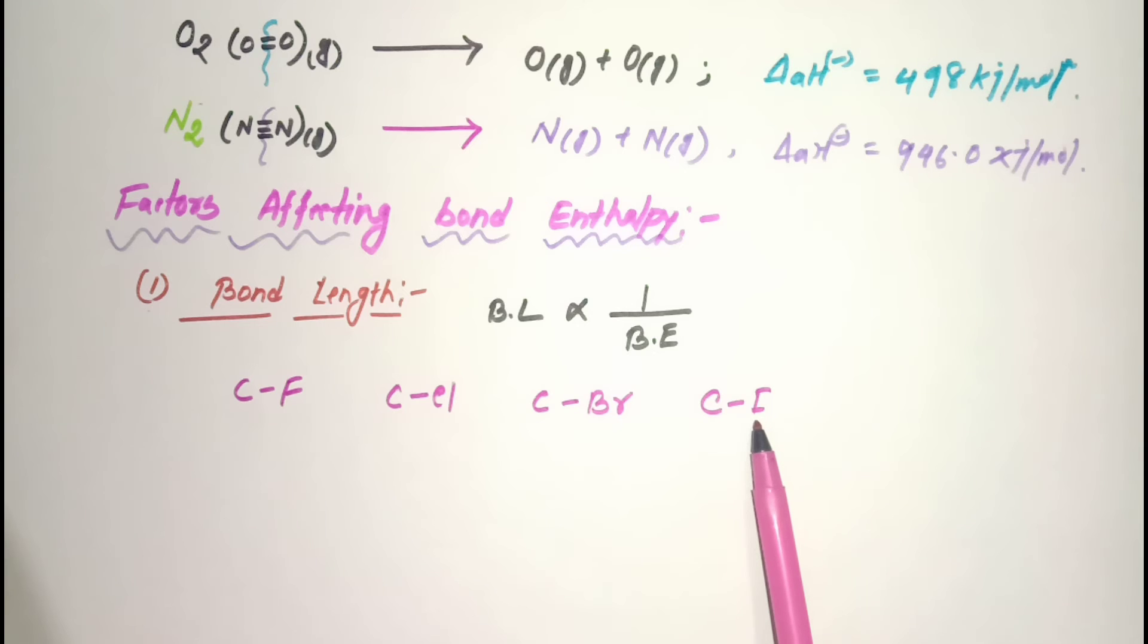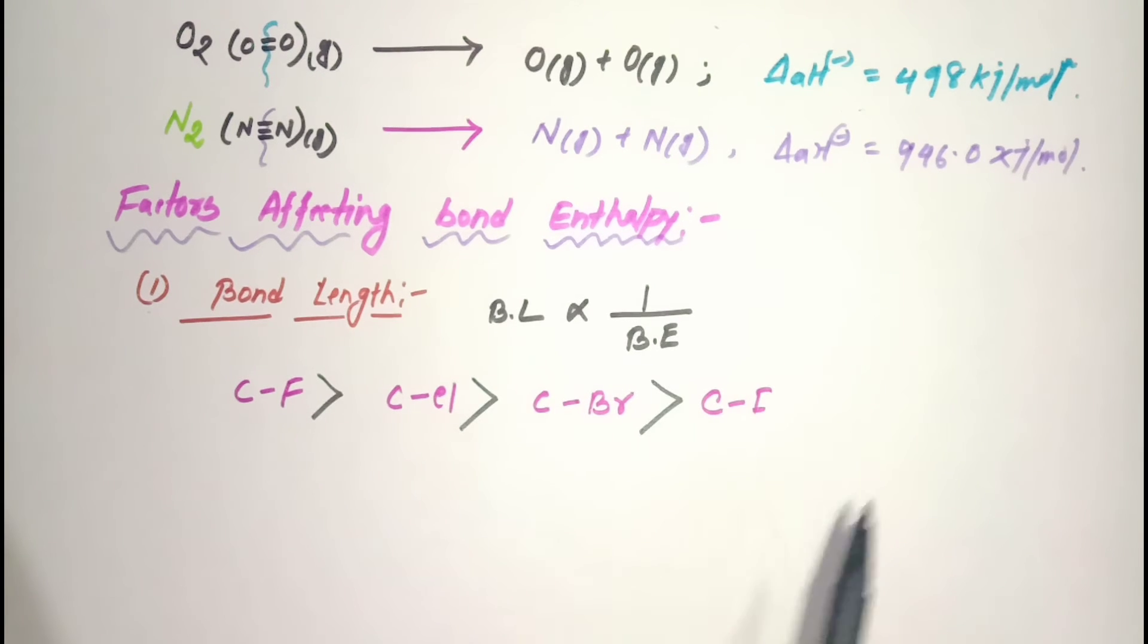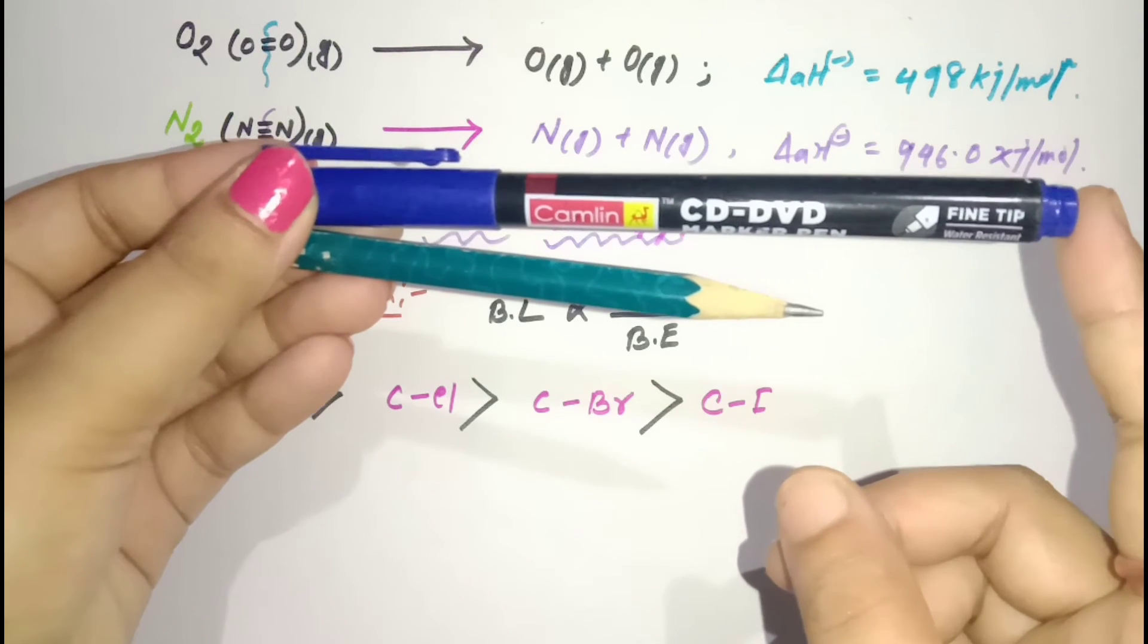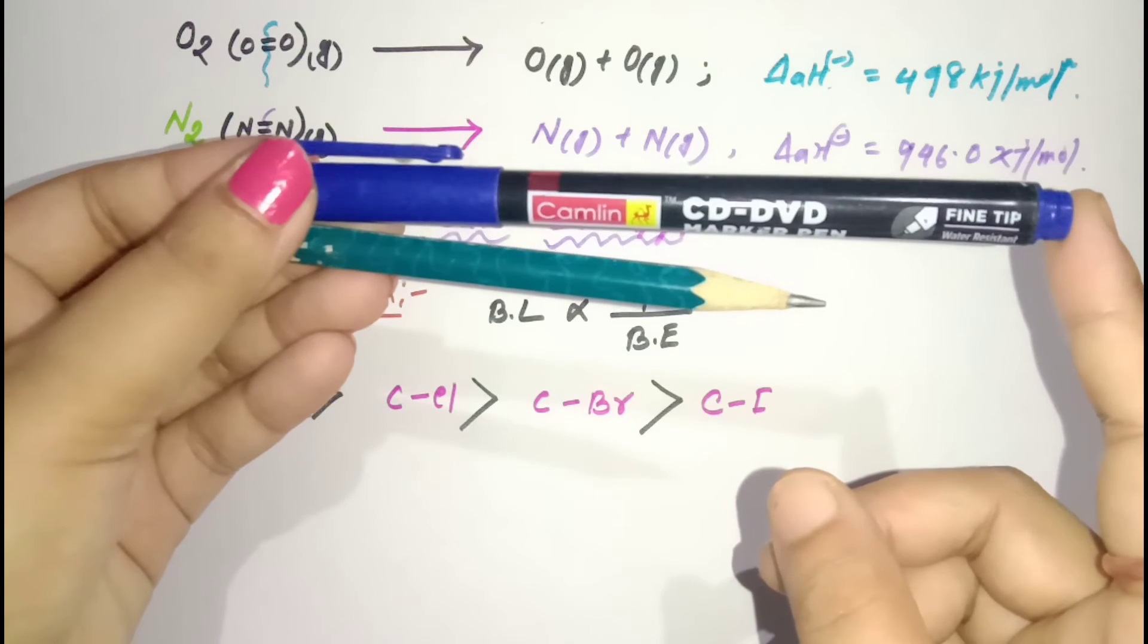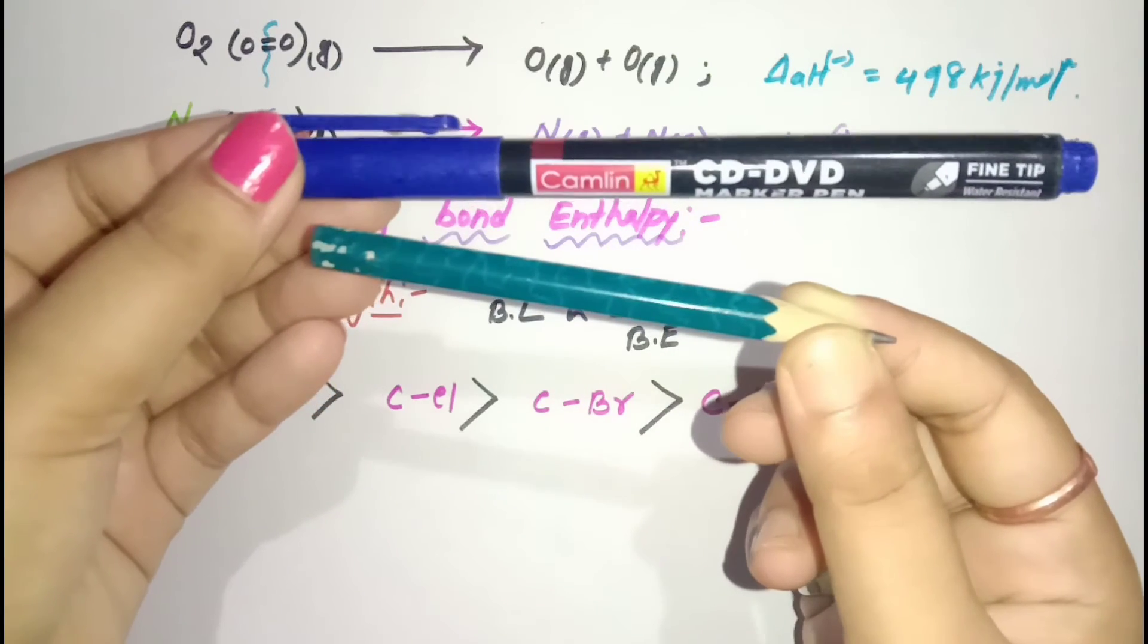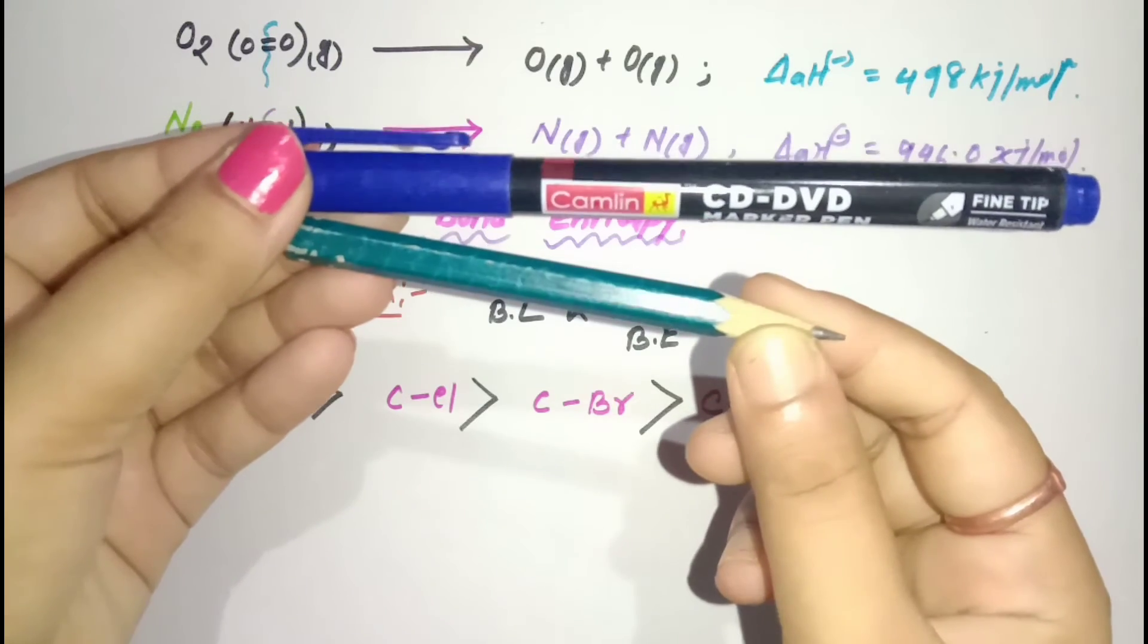The bond length between carbon and iodine is much larger because iodine's size is very large. So iodine and carbon will form longer bonds between them. This means the bond enthalpy order will be in decreasing order. The bond enthalpy of carbon and iodine is the lowest.